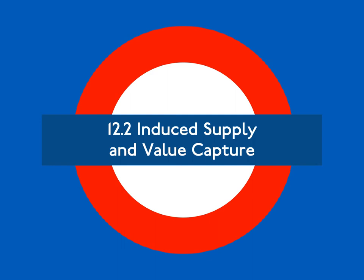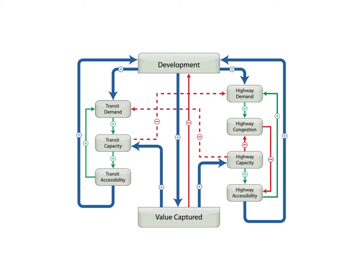12.2 Induced Supply and Value Capture. The mirror problem to induced demand is induced supply. All too often, the response to congestion is to expand roads — supply induced by changing demand patterns. Consider the London Underground: not only did new underground stations induce new development and encourage more people to travel longer distances, but more people encouraged rail promoters to build new lines to serve them, the most promising of which were approved by Parliament. It was a positive feedback system. The value was captured by land developers who benefited from new stations, new lines, and the accessibility they provided. In some cases, the land developers and the transit line builders were the same people — for instance, along the Metropolitan Line in London, where the Metroland suburbs were constructed.